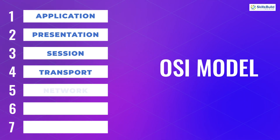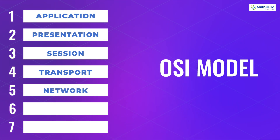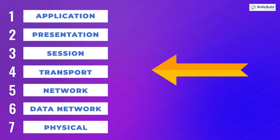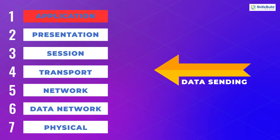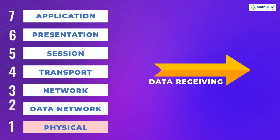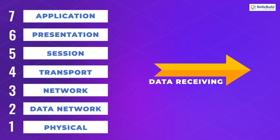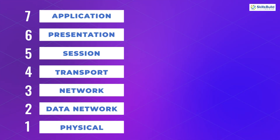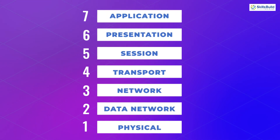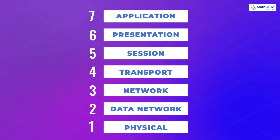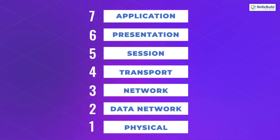The transport layer is followed by the network layer, then the data link layer, and finally the physical layer. When you are sending data, the application layer is first. When you are receiving data, the physical layer is first. There is no hard and fast rule about which layer is first — it all depends on whether you are on the receiving end or the sending end.